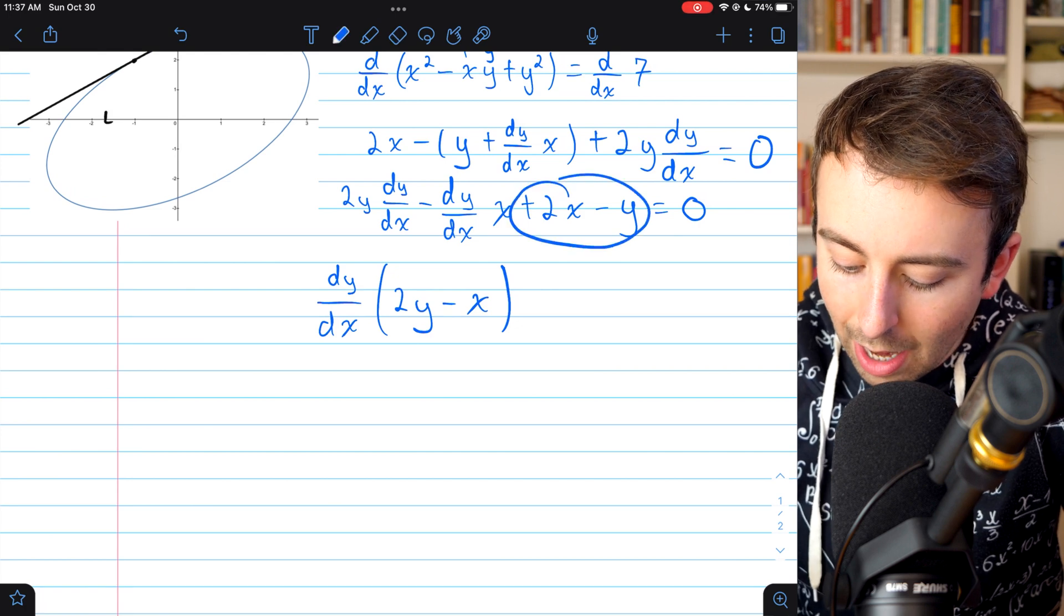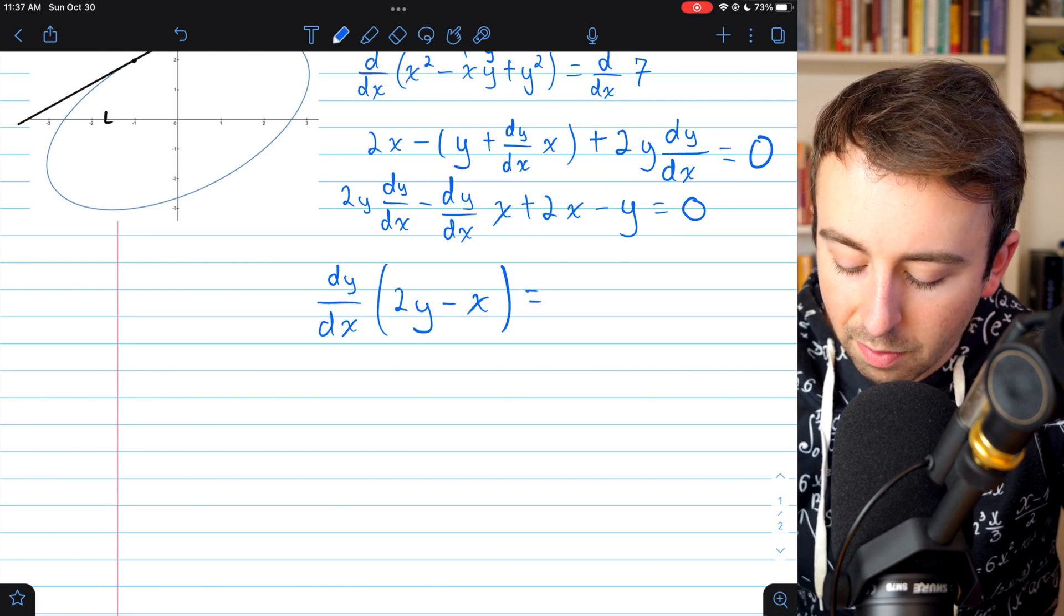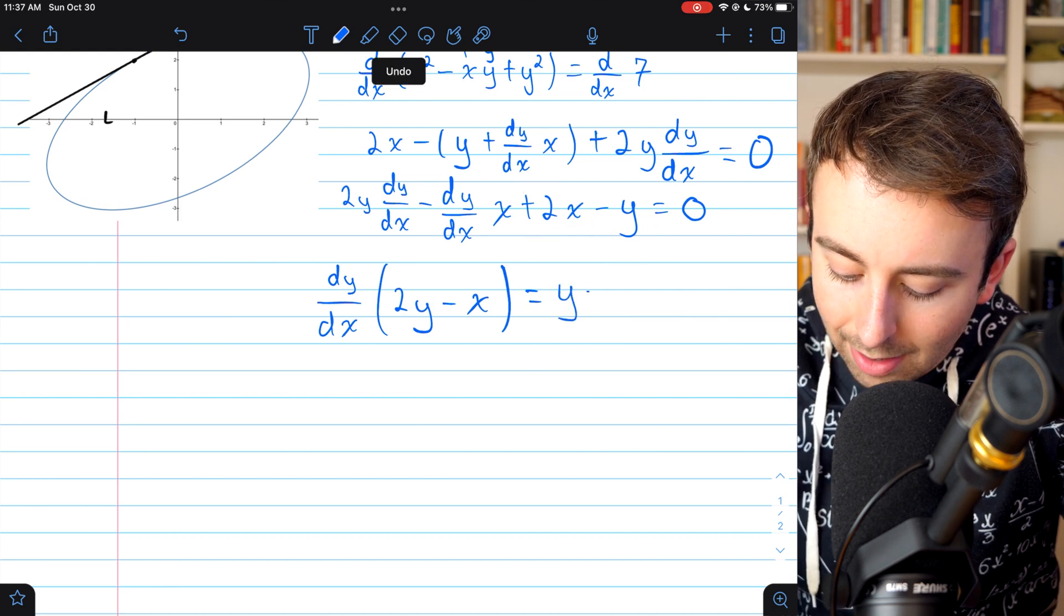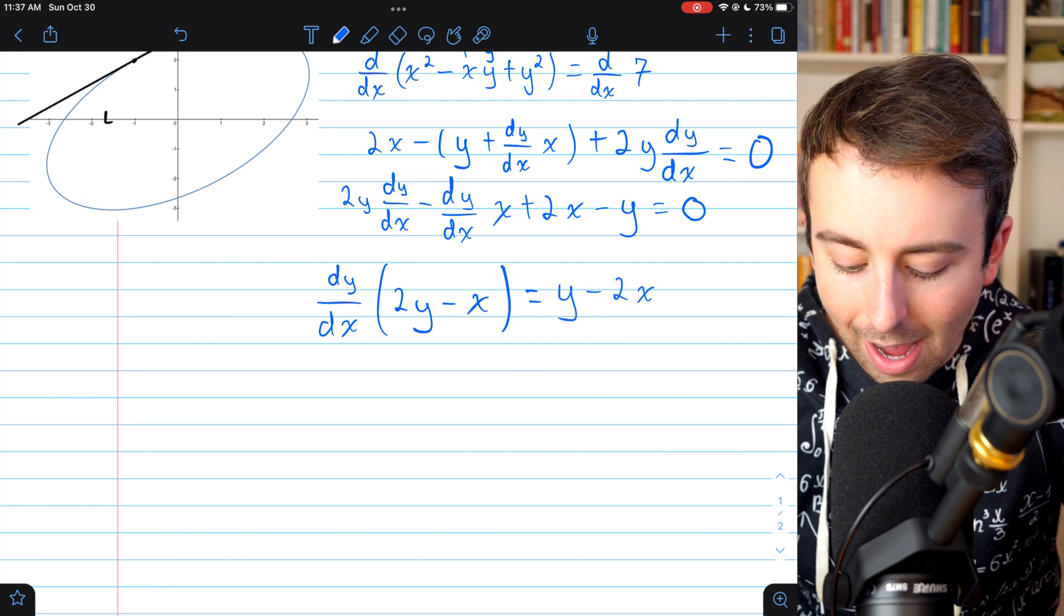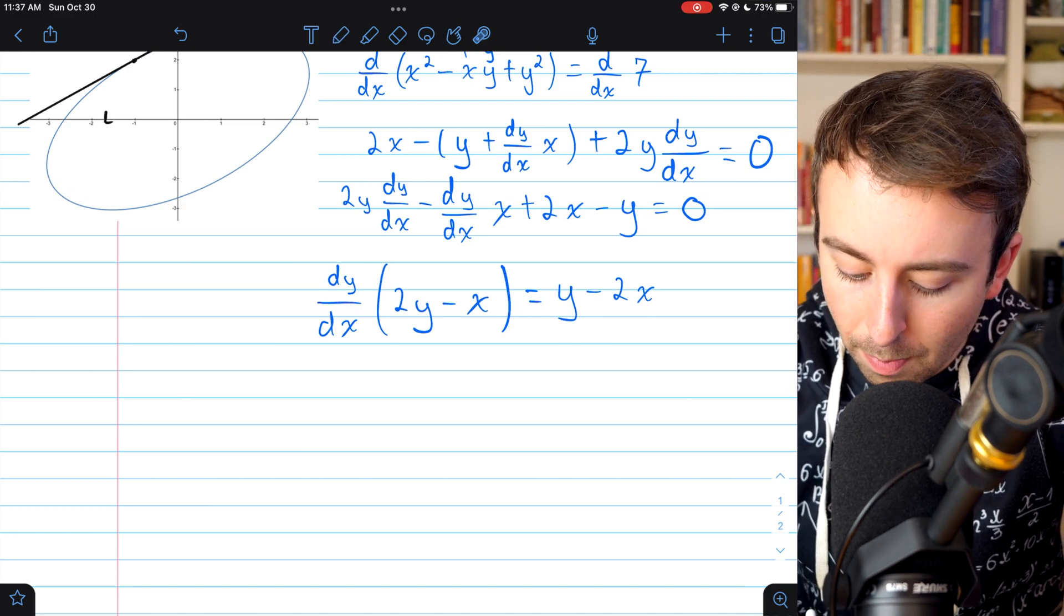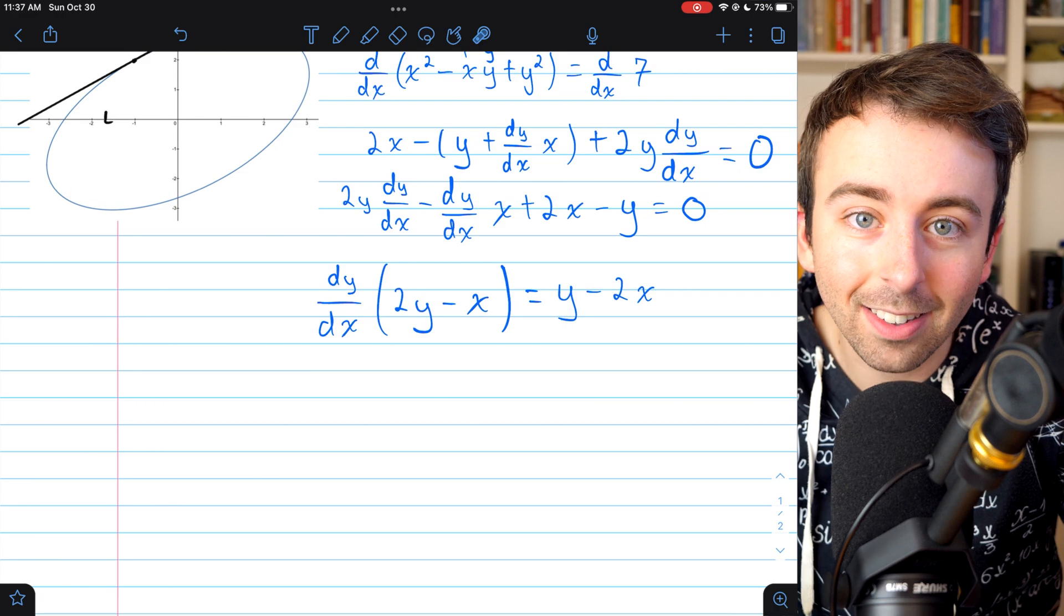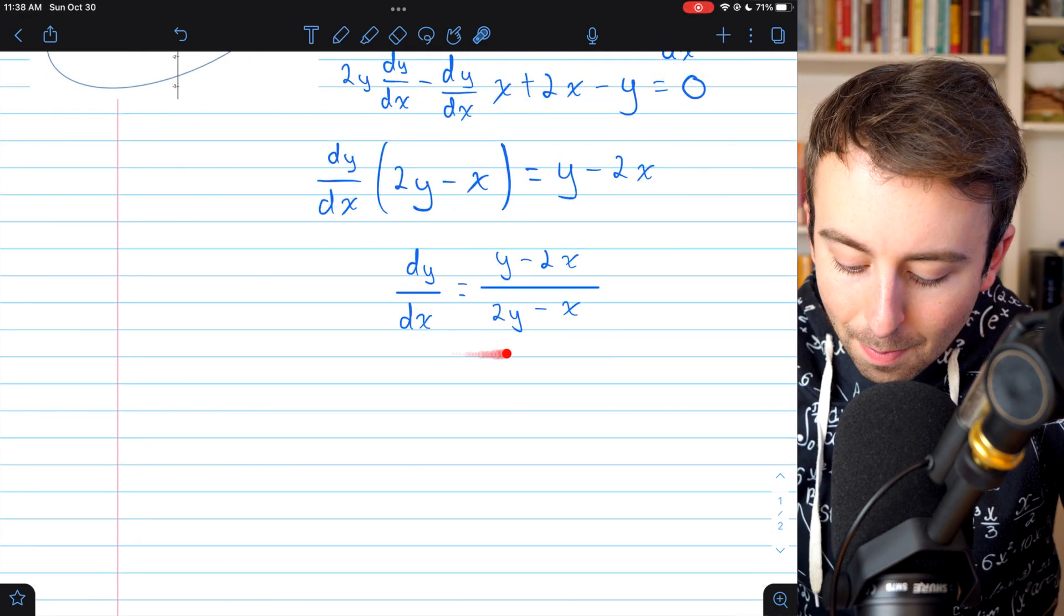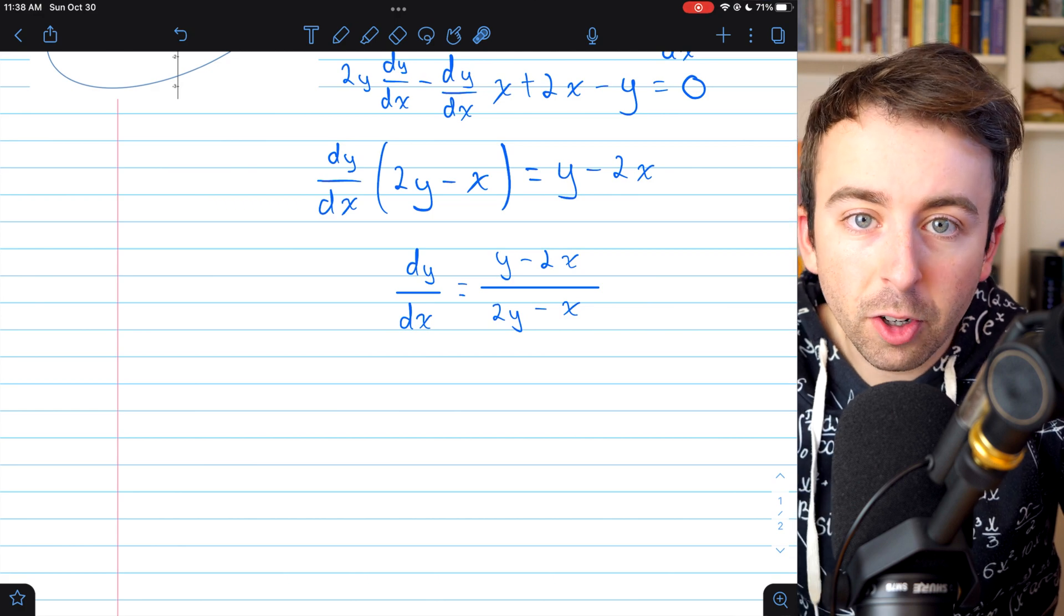Then these two characters, I'm moving to the other side of the equation. So minus y gets added to the other side, plus 2x gets subtracted from the other side. Now all that's left is to divide both sides by 2y - x. Then we'll have dy/dx all by itself, and that completes the implicit differentiation process.